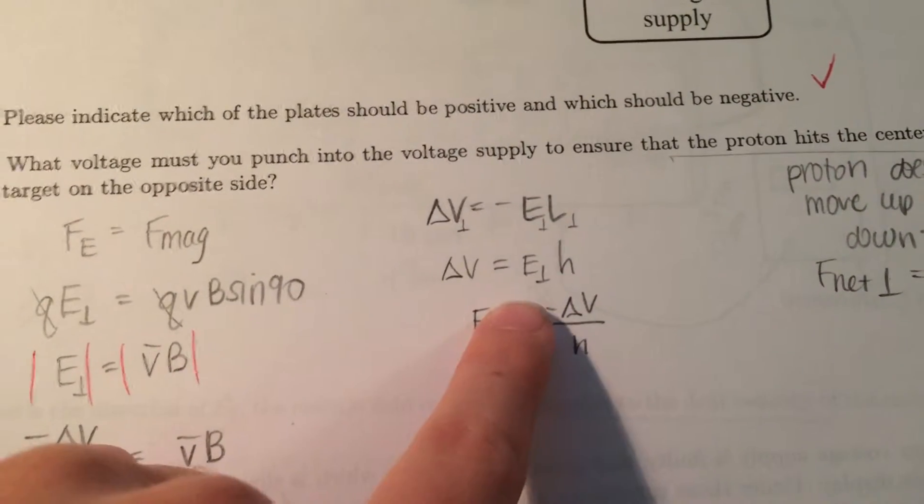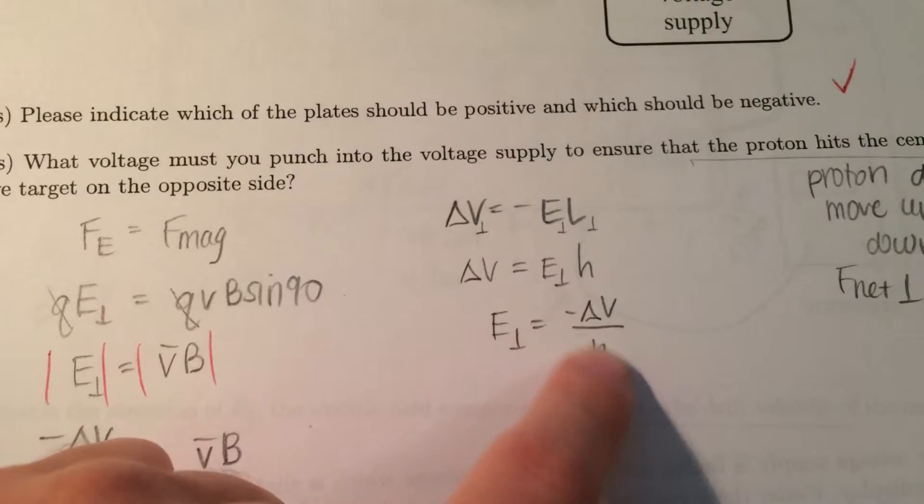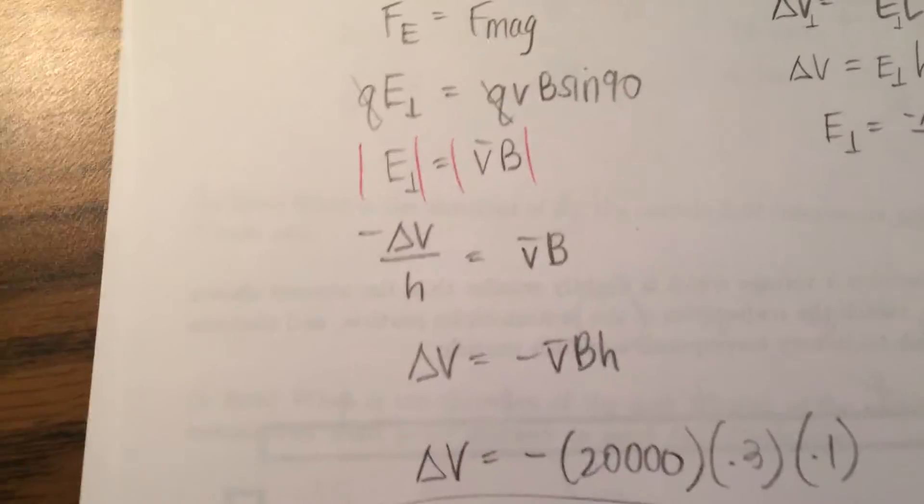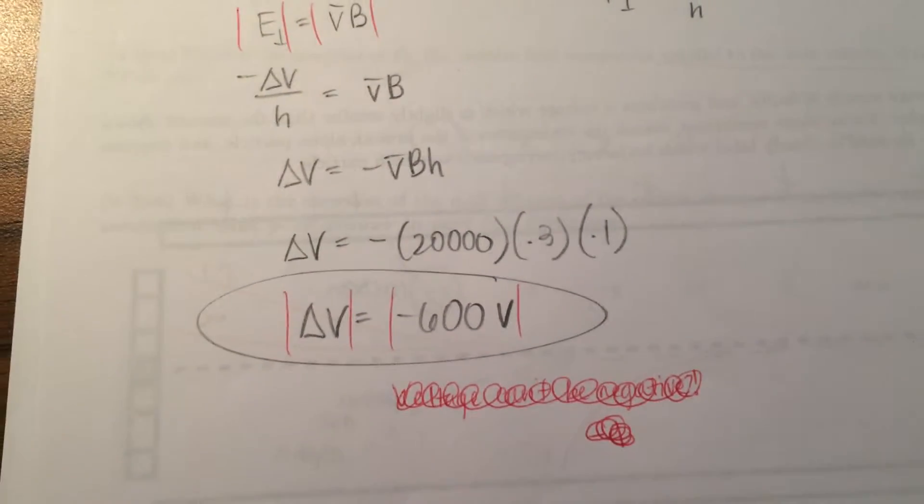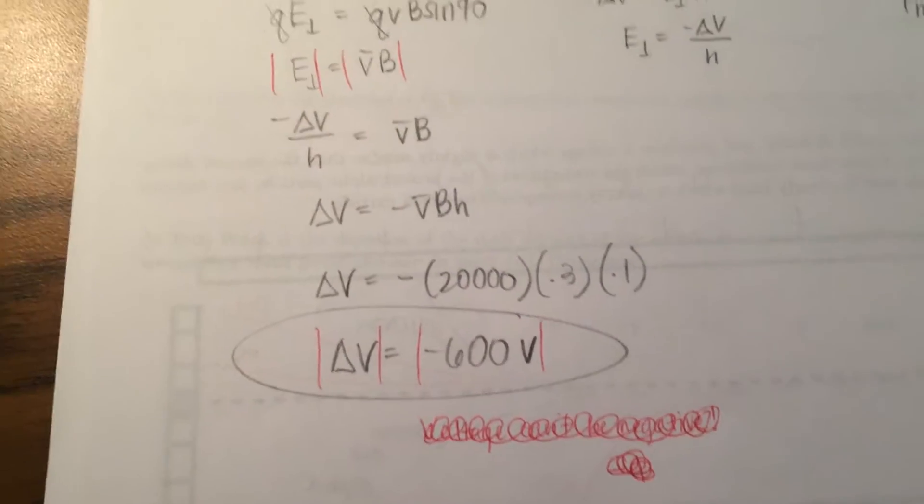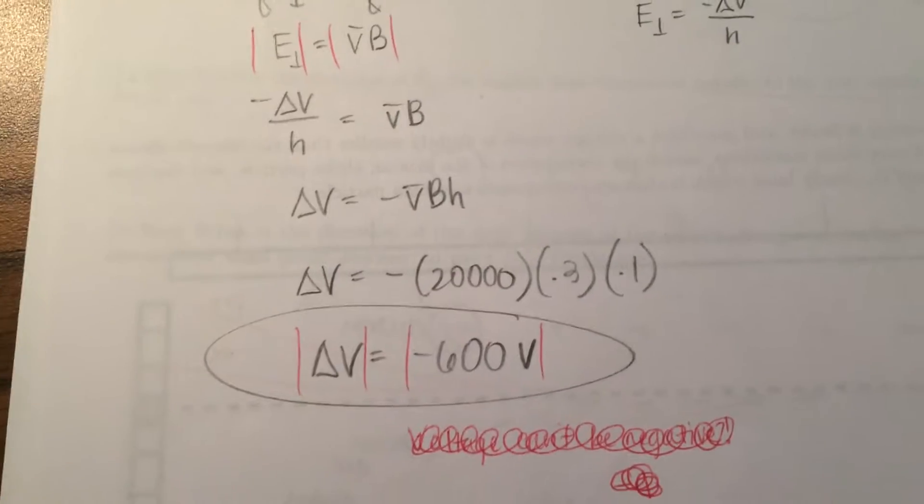So you set E perpendicular equal to negative delta V over H, which I plugged in over here. I substituted numbers in, and I got delta V equals negative 600 volts, but then again, it should have been absolute value, so delta V equals 600 volts.